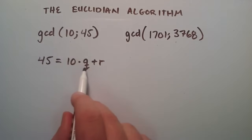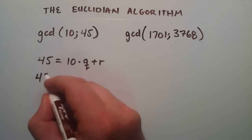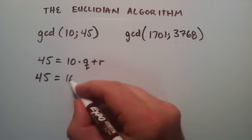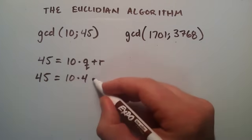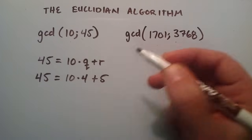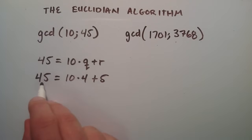So the q is how many times 10 goes into 45. The r is the remainder of that result. So for our case, it's going to be 45 is equal to 10 times 4 plus 5. 10 goes into 45 four times with a remainder of 5.